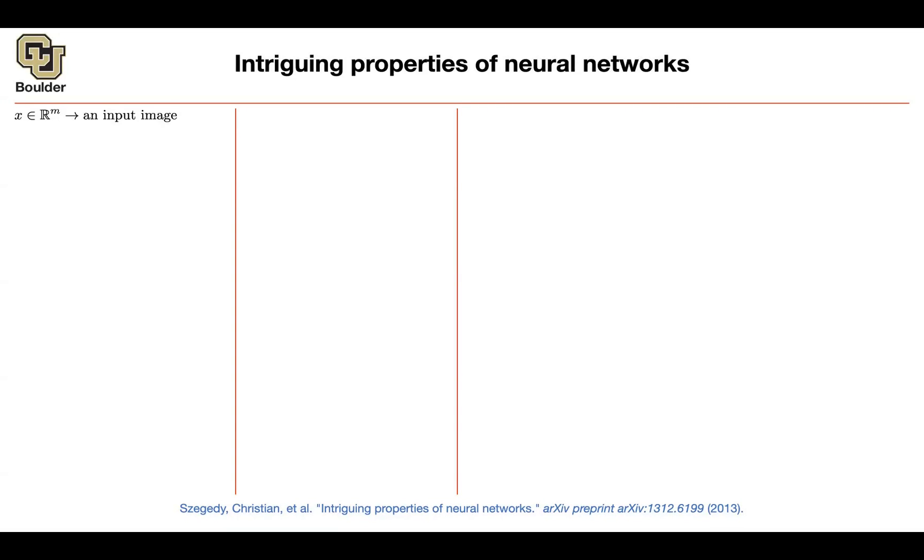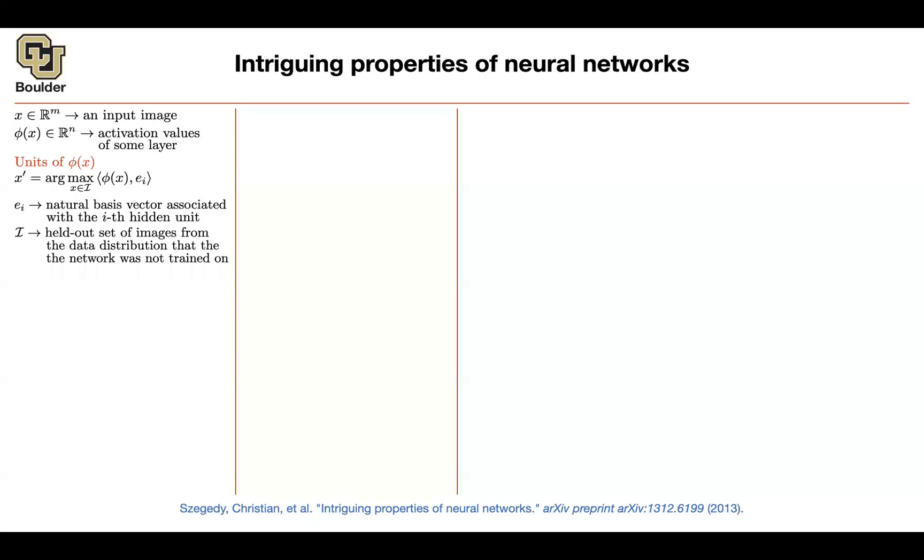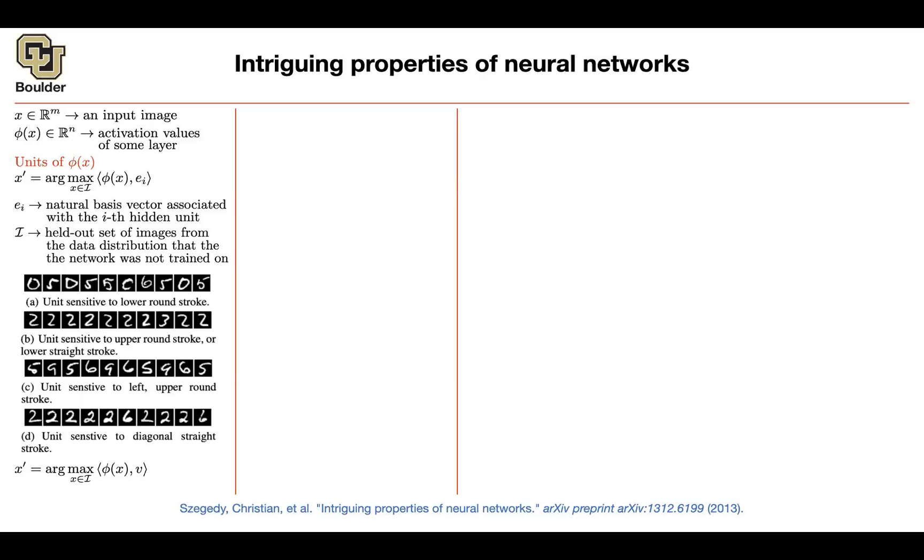Last session we started this paper about intriguing properties of neural networks and introduced two intriguing properties. One was that there is nothing special about individual units and the individual features that a neural network learns. Basically, any random direction in the space spanned by our neural network is interpretable.